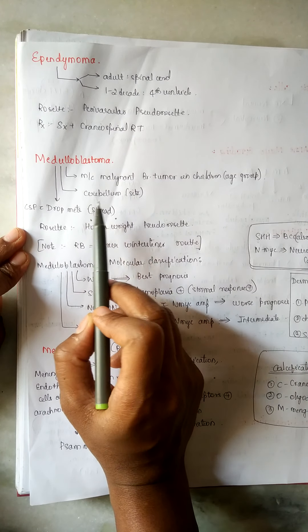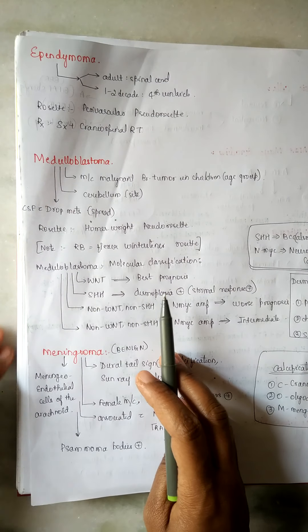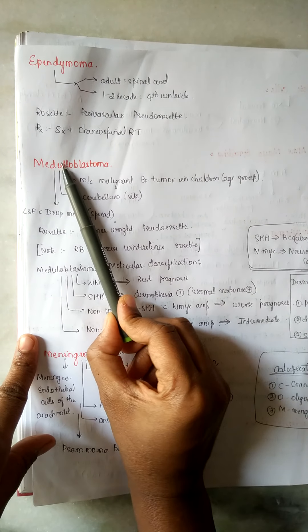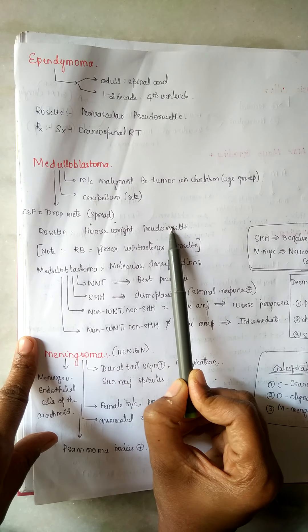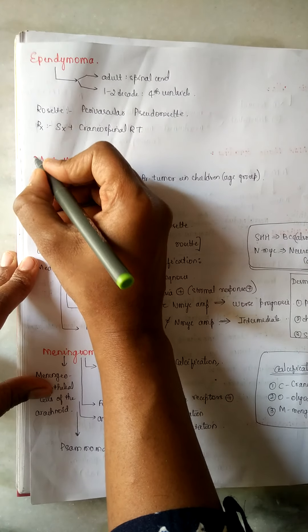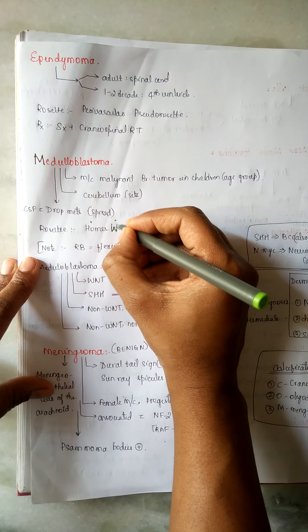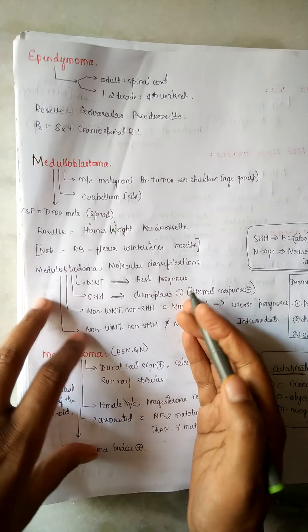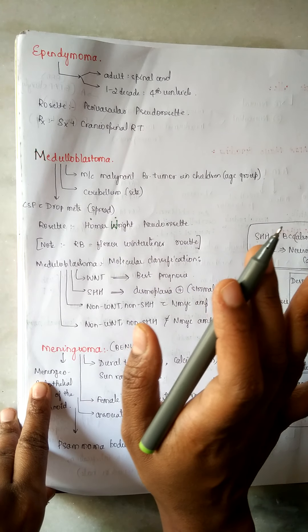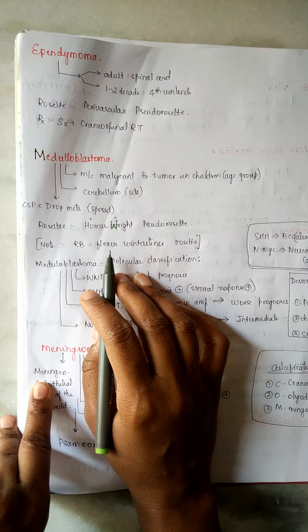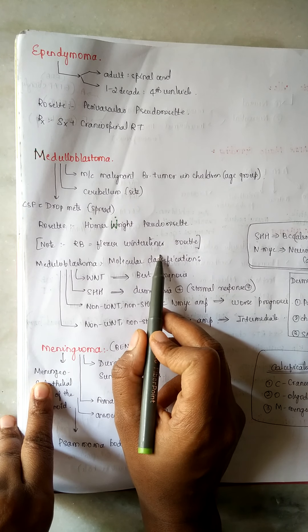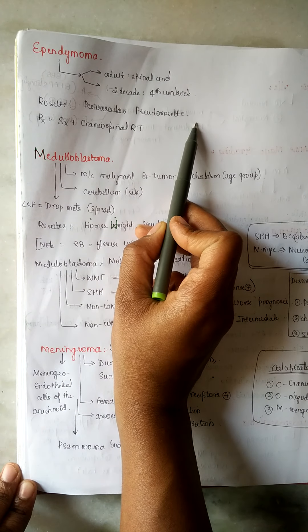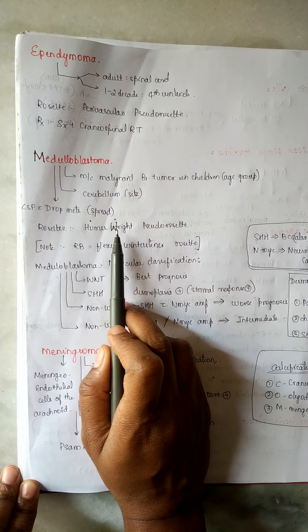A unique feature of medulloblastoma is CSF drop metastasis. Regarding rosettes: ependymoma has perivascular pseudorosette; medulloblastoma has Homer-Wright pseudorosette; and retinoblastoma has Flexner-Wintersteiner rosette. These are three types of rosettes to remember.